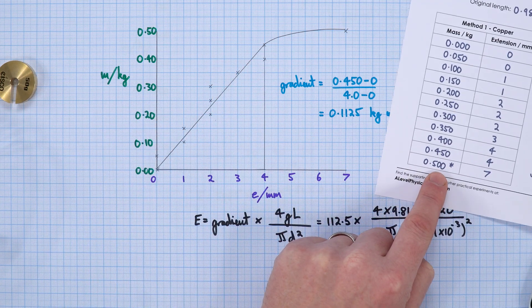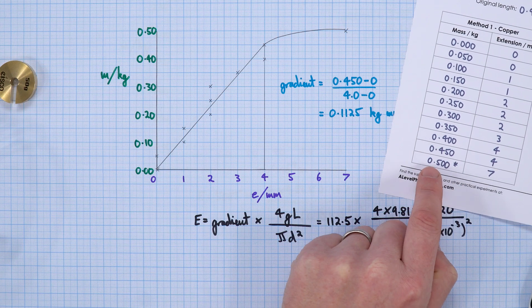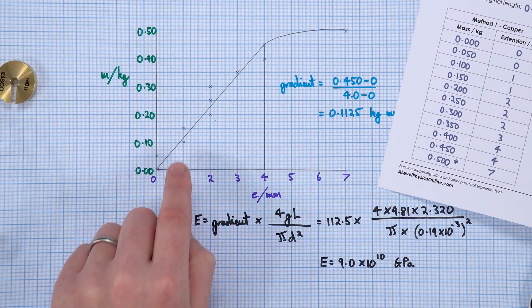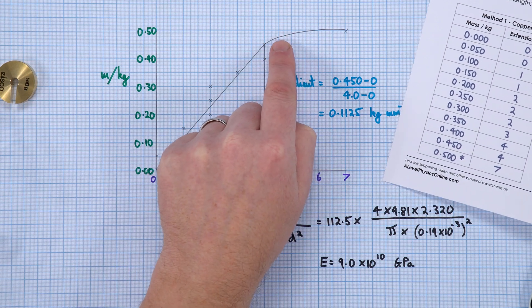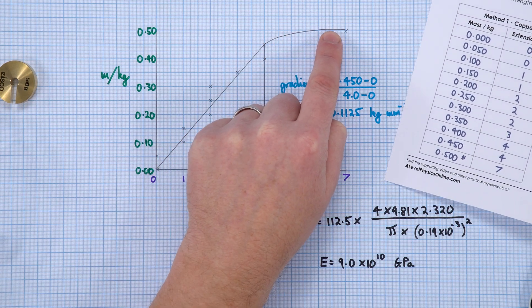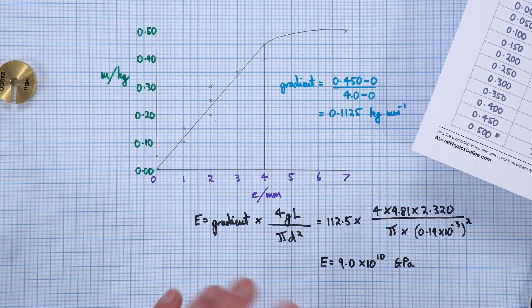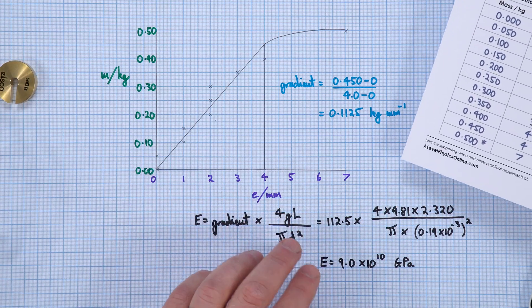When we had a higher mass being added—when we went from 450 to 500 grams—it jumped by quite a lot. This is because at this region we went into permanent plastic deformation, and when I added another 50 grams after this, the wire actually snapped.